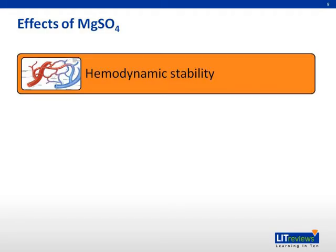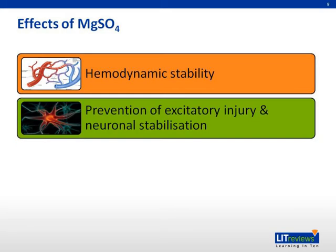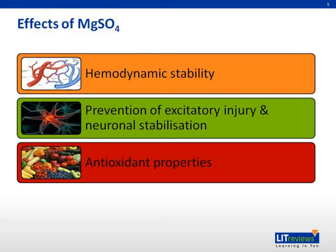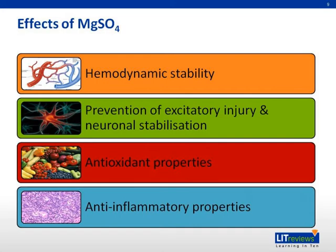From various studies, the therapeutic effects of magnesium sulfate were postulated to be in four areas: namely, maintaining hemodynamic stability, prevention of excitatory injuries, enhancing neuronal stabilization, and having antioxidant and anti-inflammatory properties.